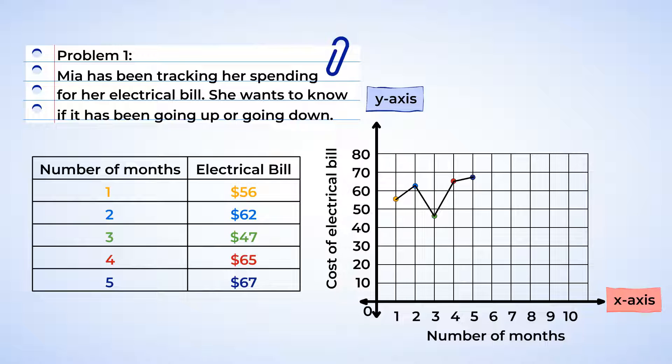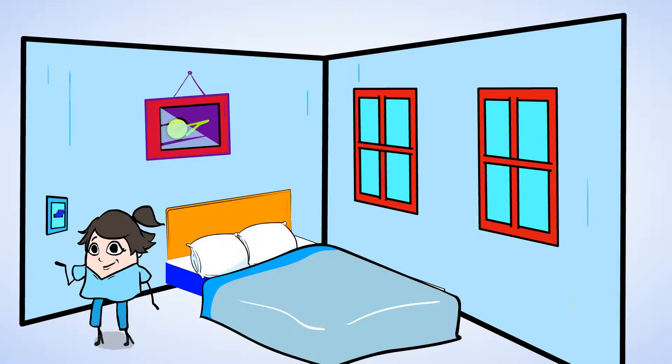Look at that! We can see that the points are mostly moving up as the months go up. Yeah, Mia's bill went down one month, but in general, her bill is going up. Maybe she should turn the lights off when she leaves the room.